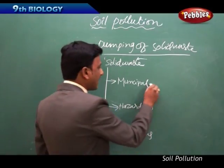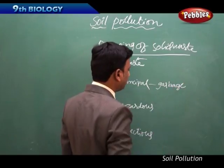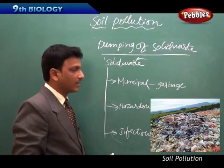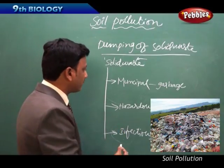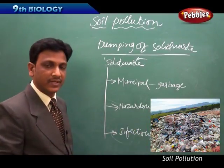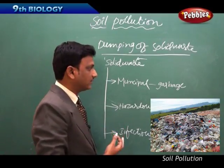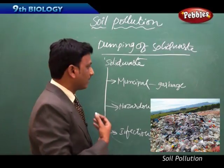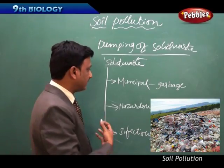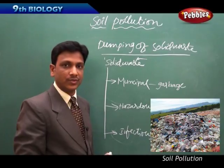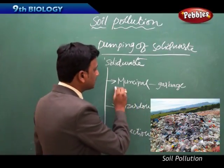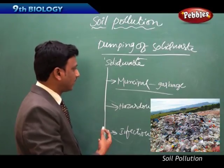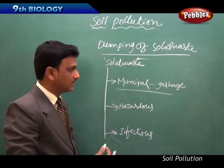The first one, municipal waste, is the garbage from households, offices - the solid waste that is dumped into the grounds. This is very dangerous. Out of this municipal waste, some amount may be biodegradable and will degrade. But most polythene covers, packaging materials, discarded electrical appliances, mobile phones, laptops, and different kinds of batteries thrown without disposal are all kinds of municipal waste. Garbage from houses, hotels, shopping complexes, and commercial areas creates a lot of problems and decreases the fertility of the soil.